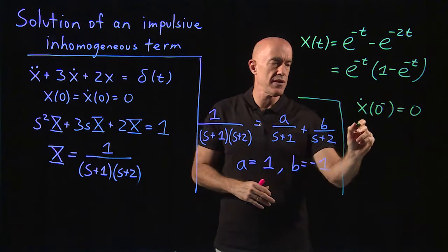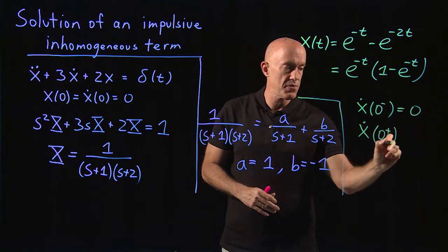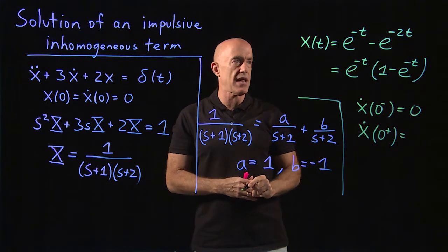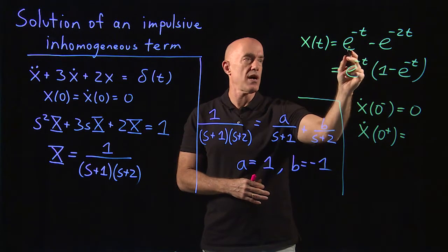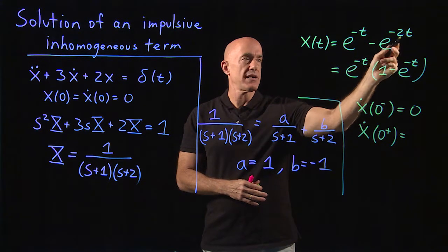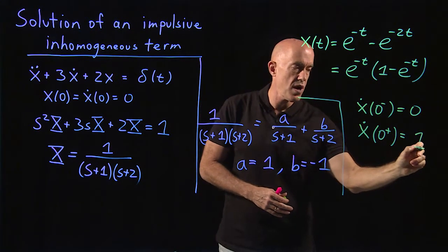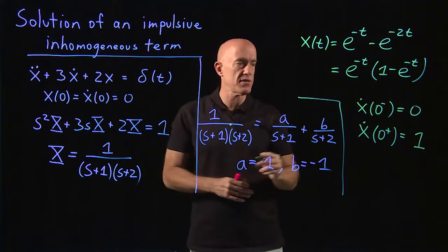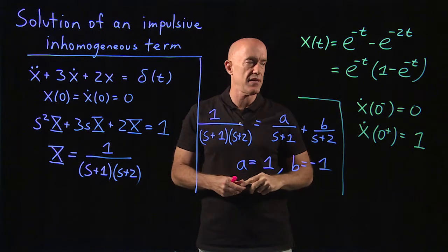But after you hit with the impulsive force, so that's at 0 plus, it's the derivative of this expression evaluated at t equal to 0. That would be minus 1 minus minus 2, or minus 1 plus 2 would be 1. So the impulse force causes a discontinuity in the velocity of x.